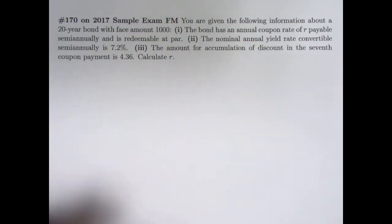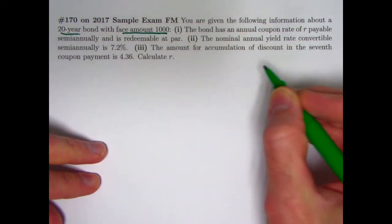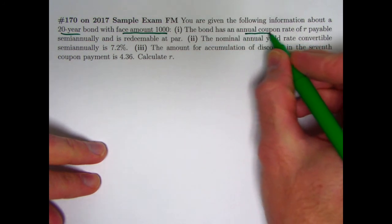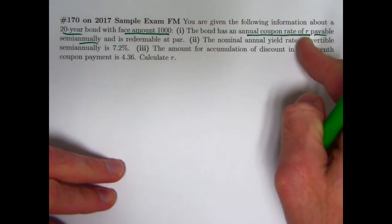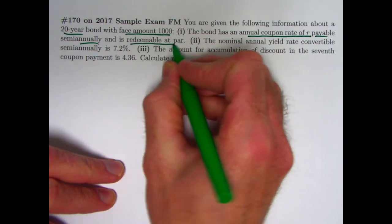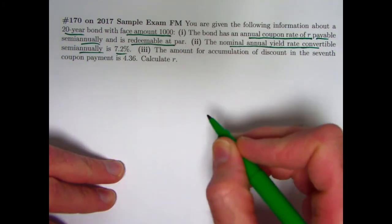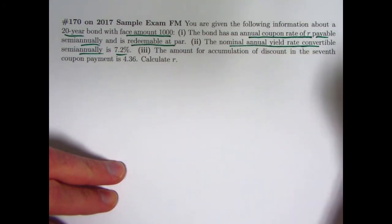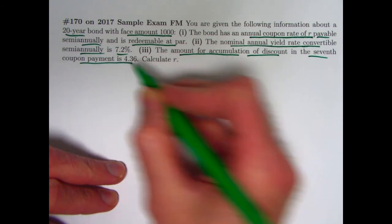Here's the problem statement. You're given the following information about a 20-year bond with face amount of $1,000. The bond has an annual coupon rate of R, payable semi-annually. Careful, that's an annual coupon rate, so R over 2 would be the effective semi-annual coupon rate. It's redeemable at par. The nominal annual yield rate convertible semi-annually is 7.2%, so the effective semi-annual yield rate would be half of that, 3.6%. The amount for the accumulation of discount in the 7th coupon payment is 4.36.